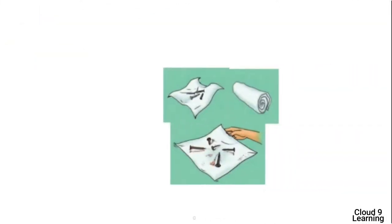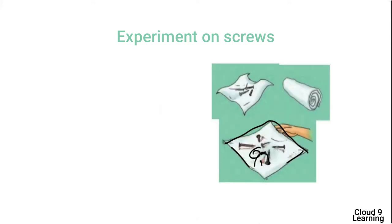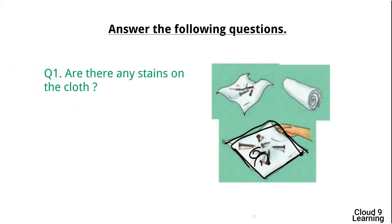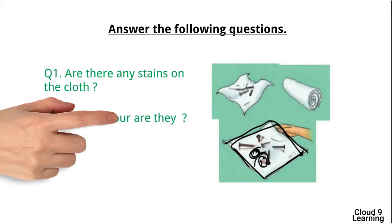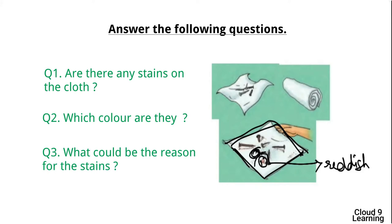Now we will see the second experiment — on screws or iron nails. You require a piece of wet cloth and a few iron nails. Wrap the iron nails in a wet cloth and leave it for two days. Observe what happens: you will find reddish-colored stains on the cloth. This is because reddish-brown rust has formed on the iron nails wrapped in the wet cloth, causing the stains.